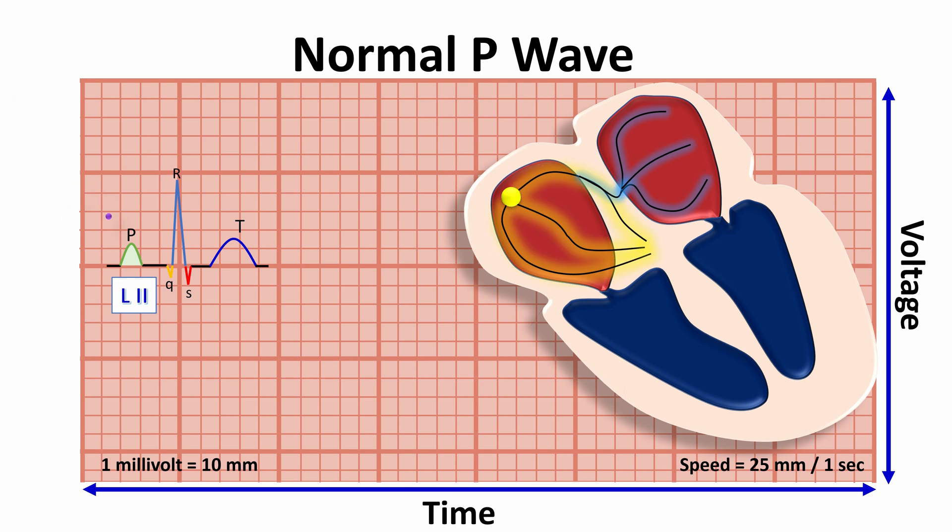Normally, the P wave has a single peak, without a gap or notch between the right and left atrial components.